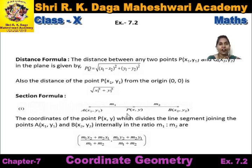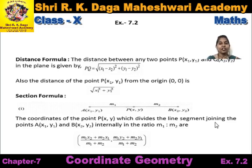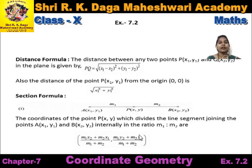Here we can find out the coordinates of point P using the section formula. The coordinate of point P(x, y), which divides the line segment joining A(x1, y1) and B(x2, y2) internally in the ratio m1 to m2, are: x = (m1·x2 + m2·x1) / (m1 + m2) and y = (m1·y2 + m2·y1) / (m1 + m2). This is the section formula.